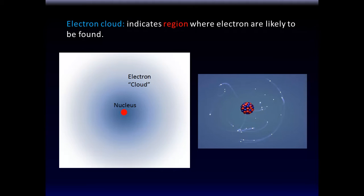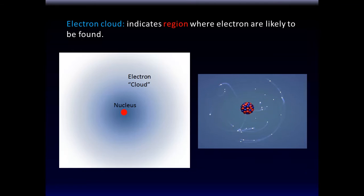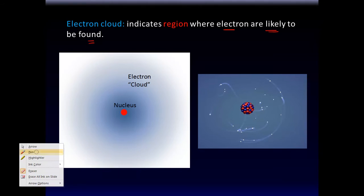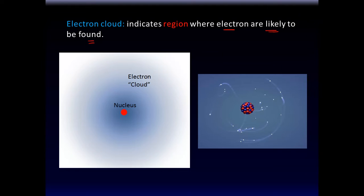Electrons don't move like planets in neat orbits — they move about more loosely. The space they occupy is called an electron cloud. The electron cloud represents the area or region around the nucleus where electrons are likely to be found. An electron for this atom won't be found far away, because it would get lost. The electron cloud is the region where an electron is most likely to be found.